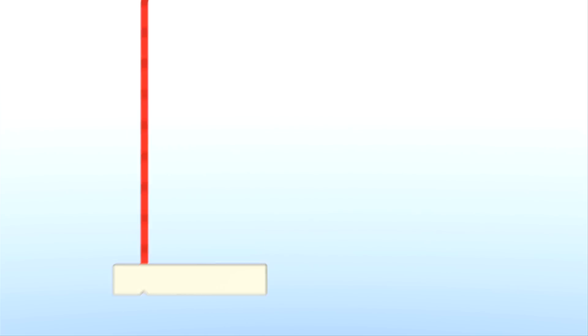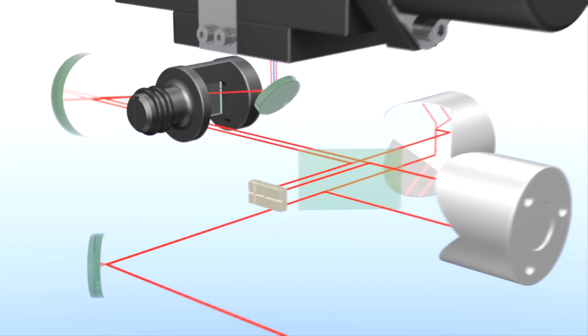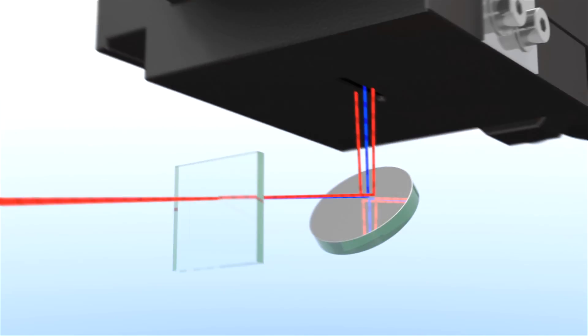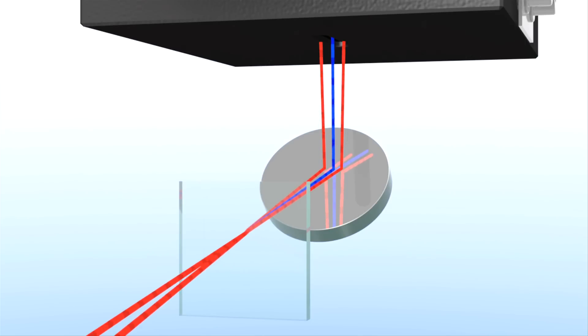By switching to non-collinear mode, both output beams no longer overlap at the detector and crosshair. Now they only overlap in the crystal. The result is a background-free SHG intensity autocorrelation signal.